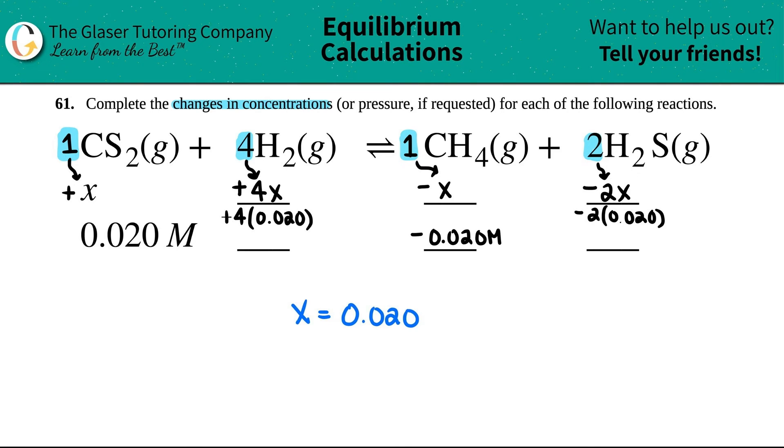Okay, so let's just do this math. Four times 0.020 is 0.080. So I get 0.080 molarity for the H2. And then I get minus 0.040 molarity for the H2S.